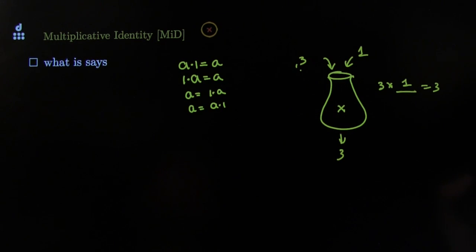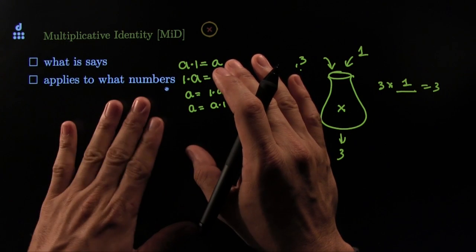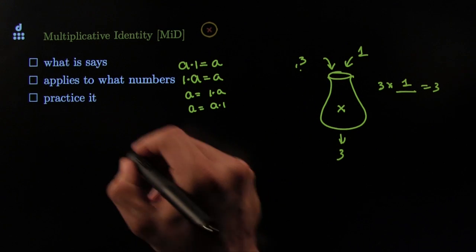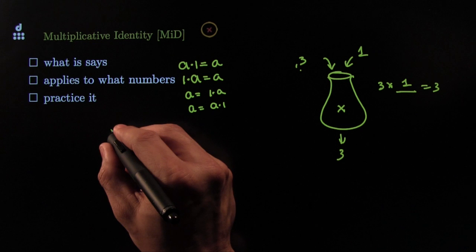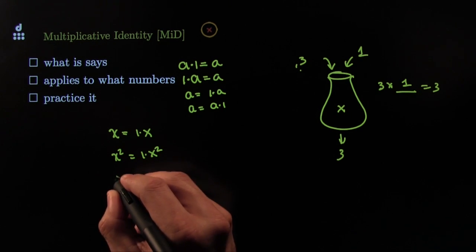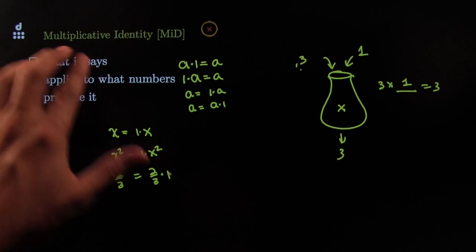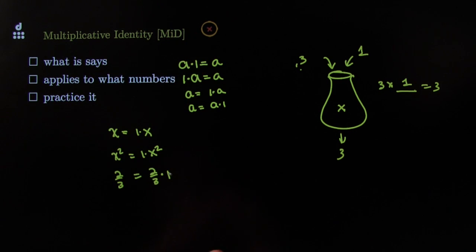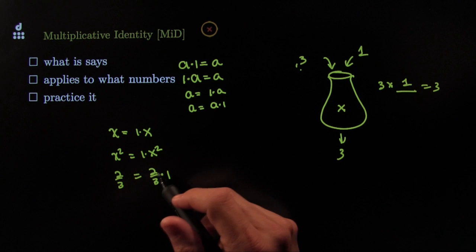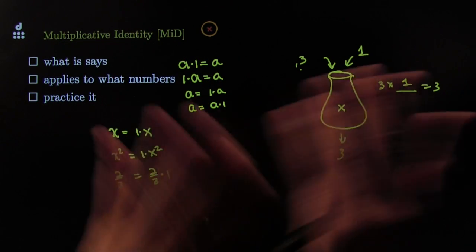And of course, to make it thorough, we'll talk about what number it applies to: all the real numbers from our class, all the variables and terms that represent real numbers. Here's how you'll often see it — with variables: x is the same thing as one times x. Or with x squared: x squared is the same thing as one times x squared. Or with fractions: two-thirds is the same thing as two-thirds times one. One times it acts like water — it doesn't do anything to it. Multiply by one, nothing happens. It's the multiplicative identity — multiplicative water.